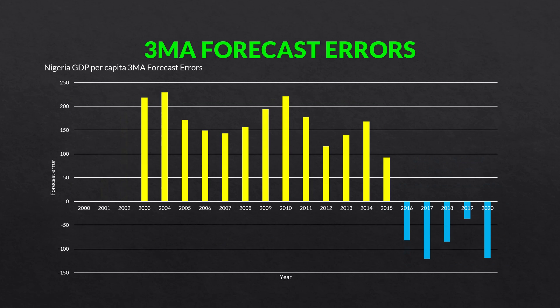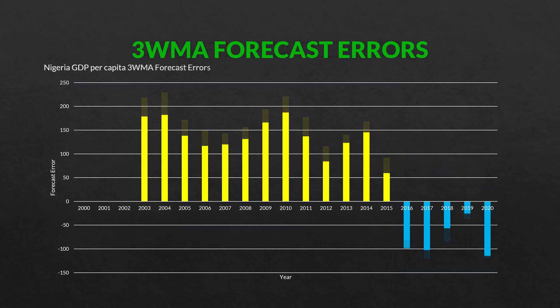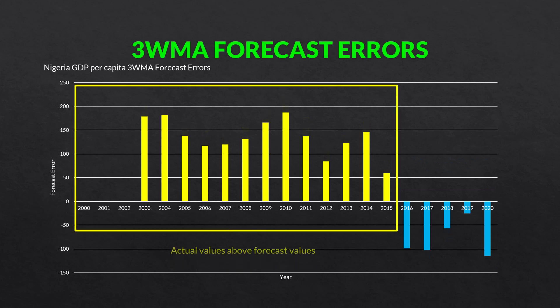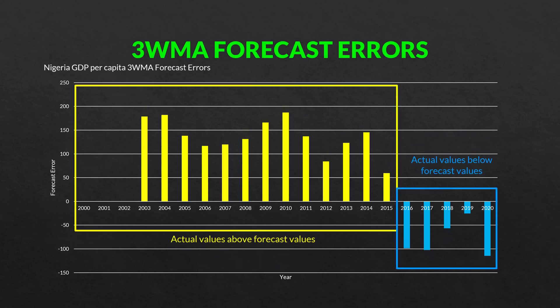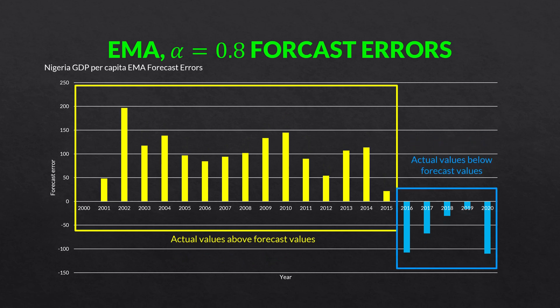Here is the three-period simple moving average forecast errors. As you can see, they are much, much larger than the naive forecast errors — the three-period simple moving average is not as good as the simple naive forecast. Then we did the three-period weighted moving average forecast, and these errors are better than the simple moving average, but still not as good as the naive forecast. Then we did the exponential moving average with an alpha of 0.8. We can see that this is a little bit better as well, but again, not as good as the naive forecast.